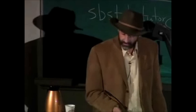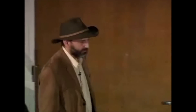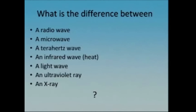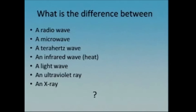So what is the difference between these different kinds of waves? What is the difference between a radio wave, a microwave, a terahertz wave, an infrared wave, a light wave, an ultraviolet ray, and an x-ray? I have here an apparatus called a traveling wave machine, and this demonstrates waves that have a very slow speed, but it lets me get across a key point.